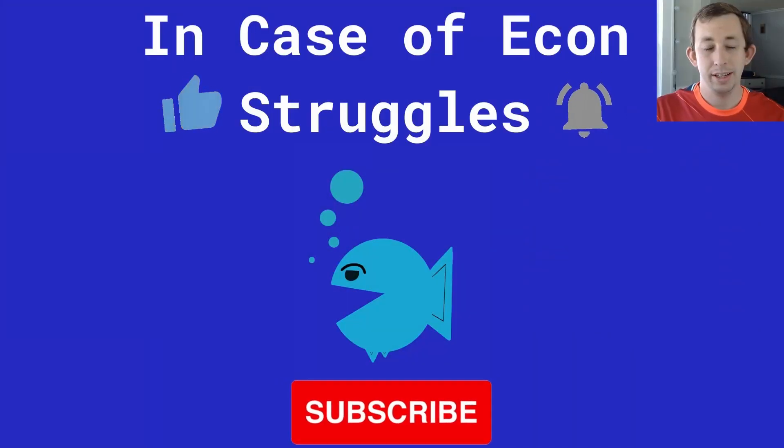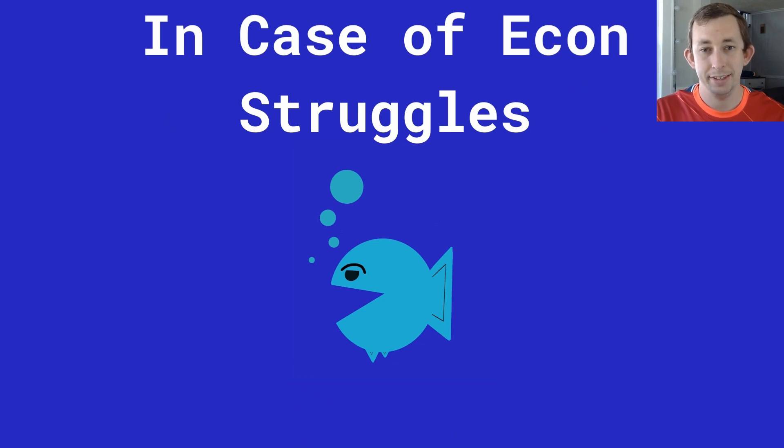So hopefully, this gives you a little more background and helps you understand propensity score matching a little better. If this was helpful, make sure to like and subscribe, and we'll see you next time for another case of econ struggles.